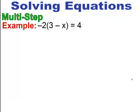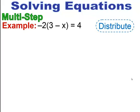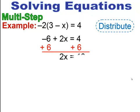Be careful whenever you have the distributive property with a negative attached to the parentheses. We have a negative 2 that needs to be distributed, and whenever you multiply by a negative, signs change. Negative 2 times positive 3 gives negative 6, and negative 2 times minus x gives plus 2x, so we get 2x minus 6 equals 4. Deal with the negative 6 first by adding it to both sides to get 2x equals 10, then divide by 2 to get x equals 5.